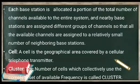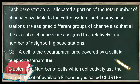Each base station is allocated a portion of the total number of channels available to the entire system, and nearby base stations are assigned a different group of channels so that all available channels are assigned to a relatively small number of neighboring base stations. Each cell consists of one base station, and some channels are allocated to that base station, through which it communicates with the subscribers.